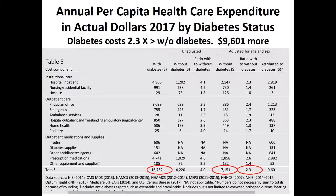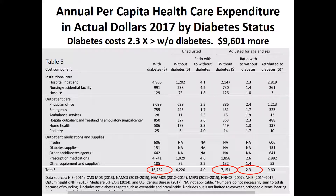On per capita expenditure, people who have diabetes spend 2.3 times as much as those without diabetes. With diabetes, expenses are about $16,000; without diabetes it's $7,000 — a differential of about $9,000 that it costs more if you happen to have diabetes. Quite expensive.